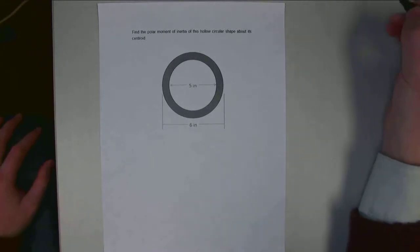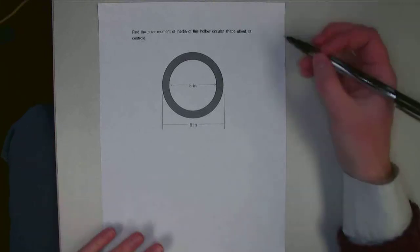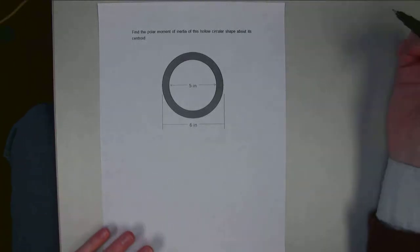Hello. For this problem, we've got a circular annulus, kind of like a donut shape. It's going to be a cross-section for something like a pipe.